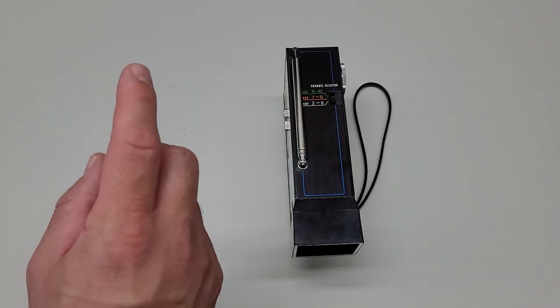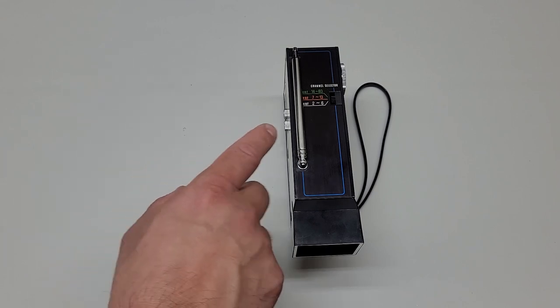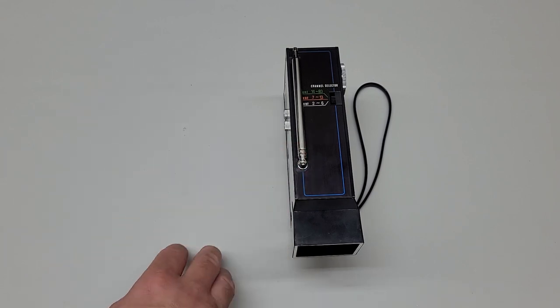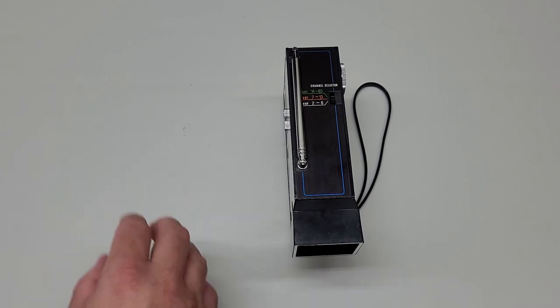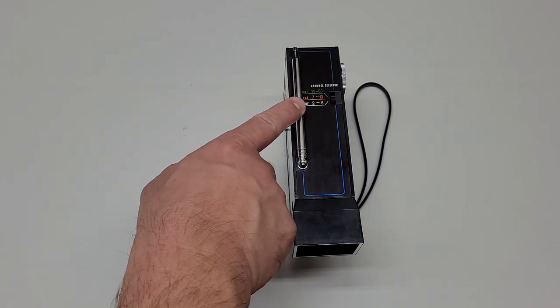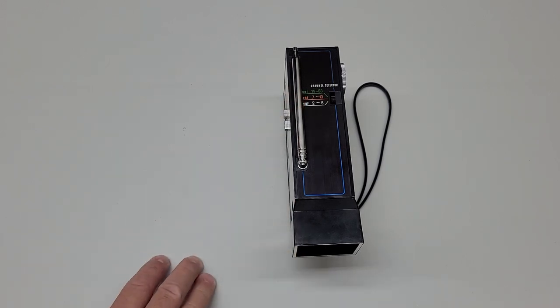Now for the UHF, that stands for ultra high frequency which is in a range of 300 megahertz to 3000 megahertz. The FCC had set aside channels 14 through 83 for that range. The transmission from UHF has a shorter wavelength so it often relies on a clear line of sight for the best transmission.